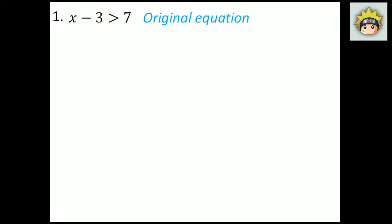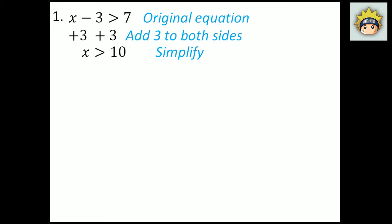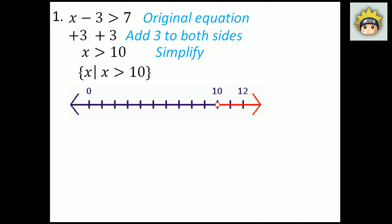Number 1. My first step is always to write the original equation: x minus 3 is greater than 7. I'm trying to get x alone, so I'm going to use the inverse property — the inverse of subtract 3 is add 3. So I add 3 to both sides. What I have left on the left-hand side is x, and on the right-hand side is 10, because 7 plus 3 is 10. In set builder notation: x, x is greater than 10. On the number line, the dot at 10 is open because it is a strict greater than, and it goes to the right because x is greater than 10. So any value of 11, 12, 13 and so forth would be valid.